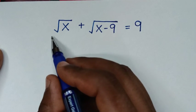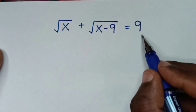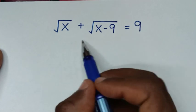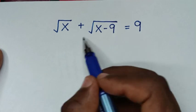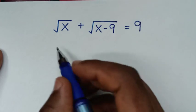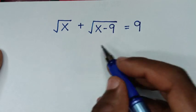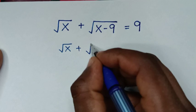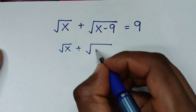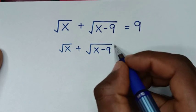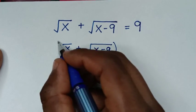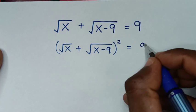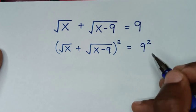To find the value of x from this equation, in the first step we'll start by squaring both sides. So from this side, which is square root of x plus square root of x minus 9, we'll square this side, and it is equal to 9 squared on the right side as well.